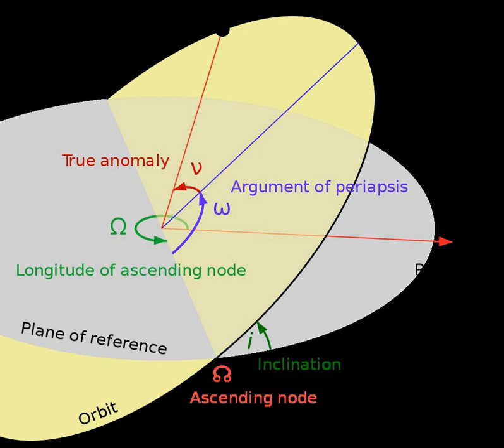An argument of periapsis of 90 degrees means that the orbiting body will reach periapsis at its northmost distance from the plane of reference.